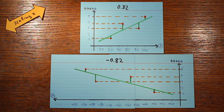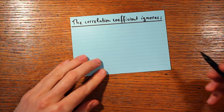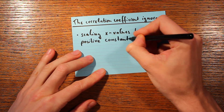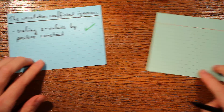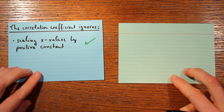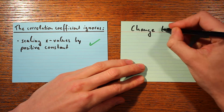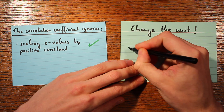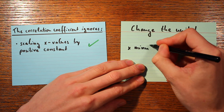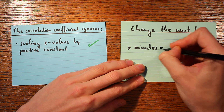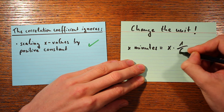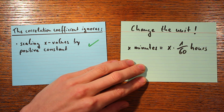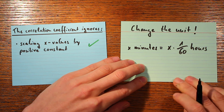Why is it useful that the correlation coefficient ignores multiplying the x values by a positive constant? It means we can switch the unit of the x-axis without changing the correlation coefficient. For example, if I want the scatter plot in hours instead of minutes, I'd multiply all x values by 1 over 60 — and that wouldn't change the correlation coefficient.